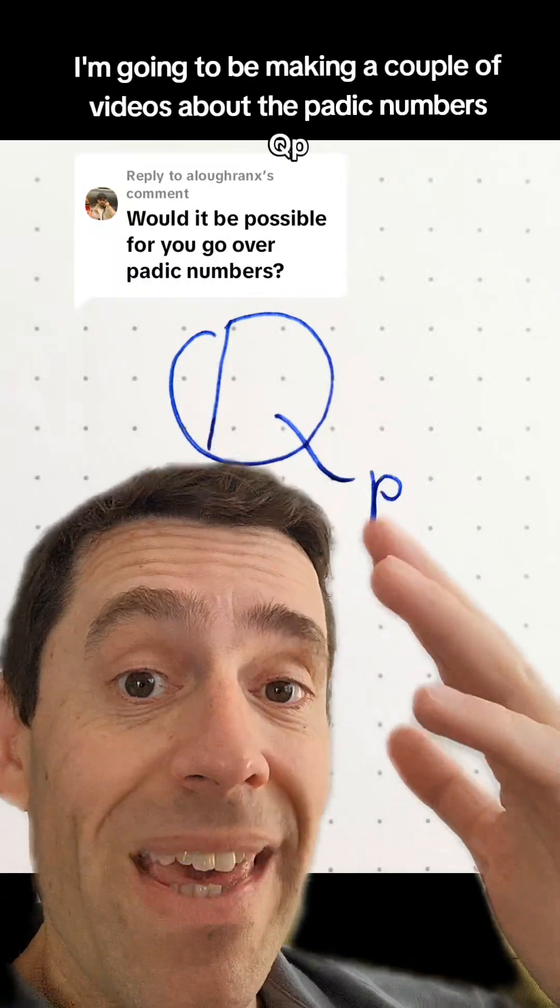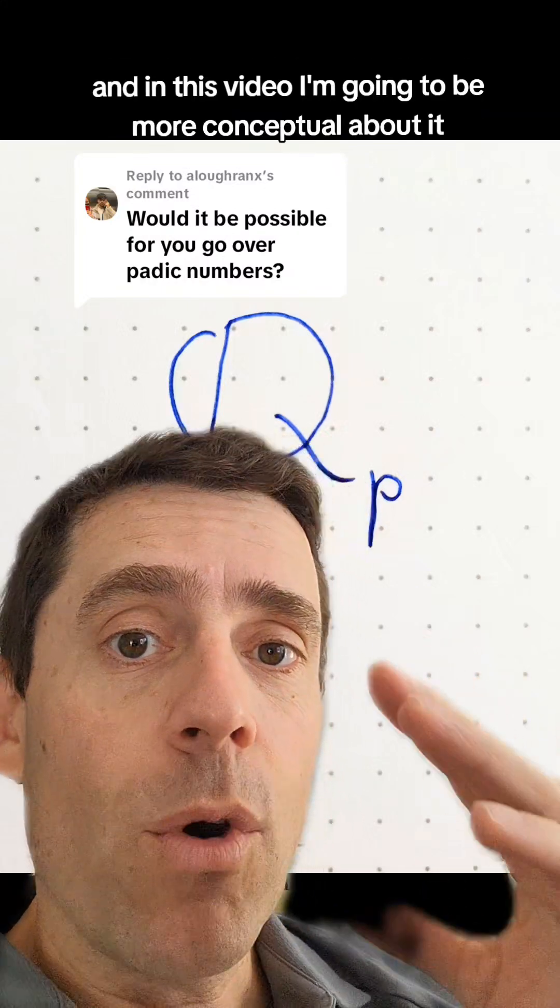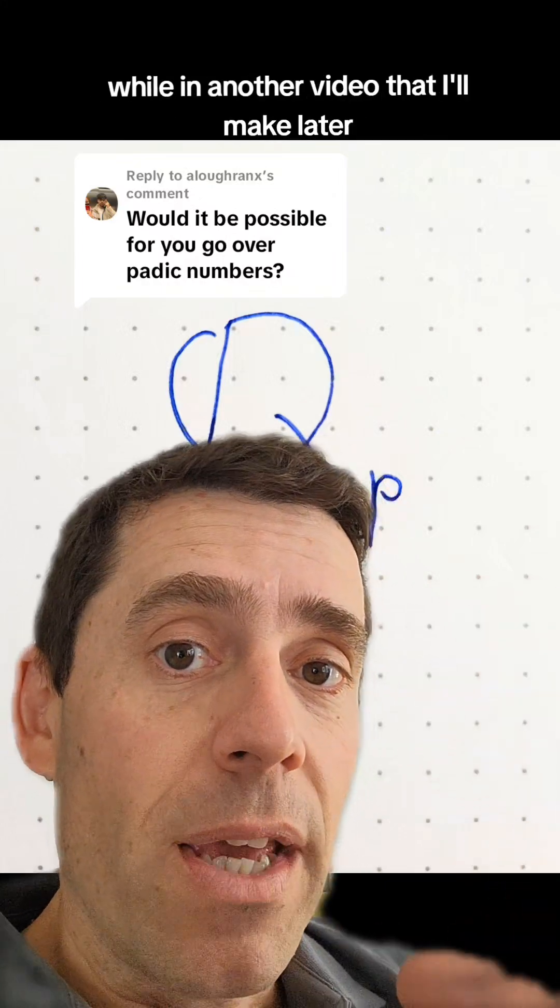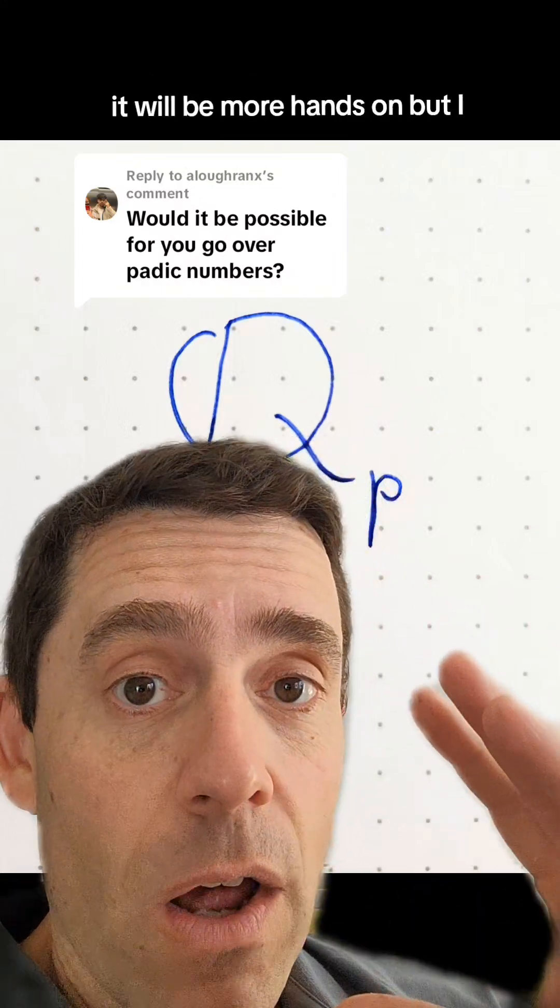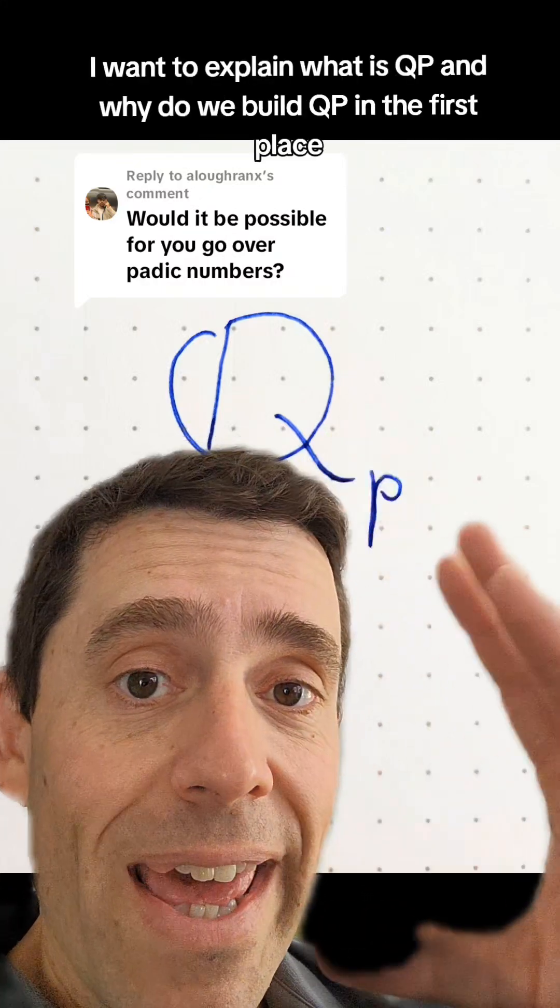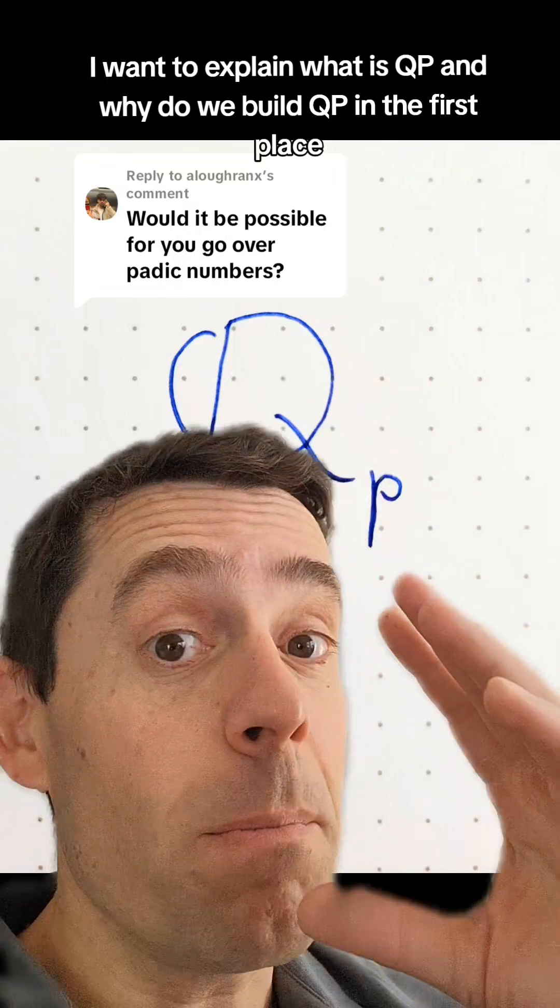I'm going to be making a couple of videos about the p-adic numbers, QP. In this video I'm going to be more conceptual about it, while in another video that I'll make later it will be more hands-on. But in this video I want to explain what is QP and why do we build QP in the first place.